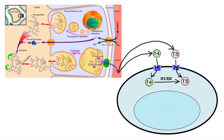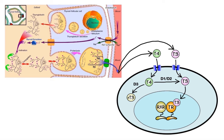On the other hand, deiodinase 3, abbreviated D3, serves to inactivate T4 by converting it to so-called reverse T3, RT3 for short, thereby limiting the amount of T4 that can be used to form T3. In the final step, T3 moves to the nucleus and binds to the thyroid hormone receptors, which then form heterodimers with the retinoid X receptor to induce transcription of target genes known as thyroid response elements. This leads to synthesis of various regulatory proteins, which then mediate various physiological responses.